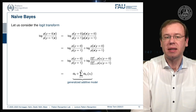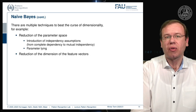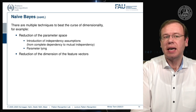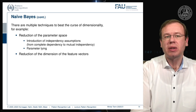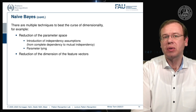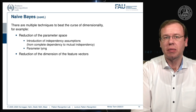Is there anything between Bayes and Naive Bayes? The answer is yes. There are multiple techniques that try to beat the curse of dimensionality. For example, you can reduce the parameter space as we did with Naive Bayes, but without assuming complete independence. We can use a weak independence, in contrast to complete mutual dependency or complete mutual independency. We will look into an example on the next slide.